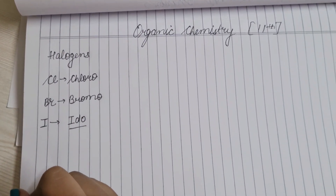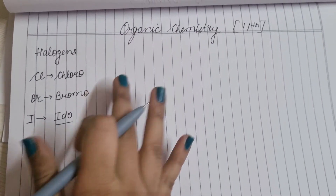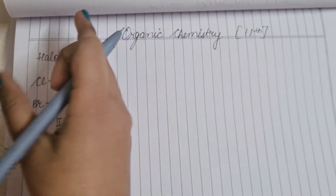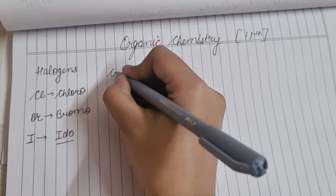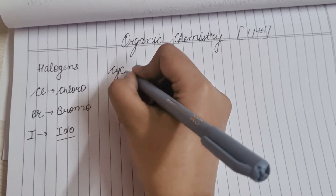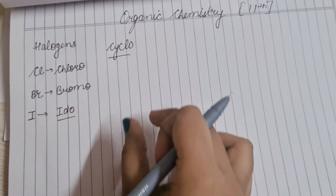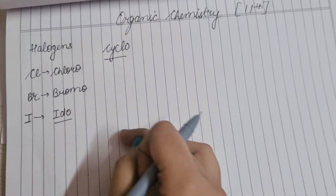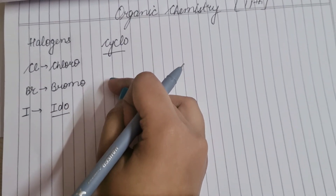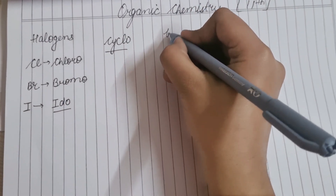Halogens کے بعد ہمیں یہ check کرنا ہوتا ہے کہ وہ compound جو ہمارا ہے، وہ کہیں cyclo تو نہیں ہے۔ کیونکہ جب cyclo ہوگا، تب rules تھوڑے الگ ہو جاتے ہیں۔ Cyclo یعنی کہ cycle کی form میں تو نہیں ہے compound ہمارا۔ پھر ہم word root پر جاتے ہیں۔